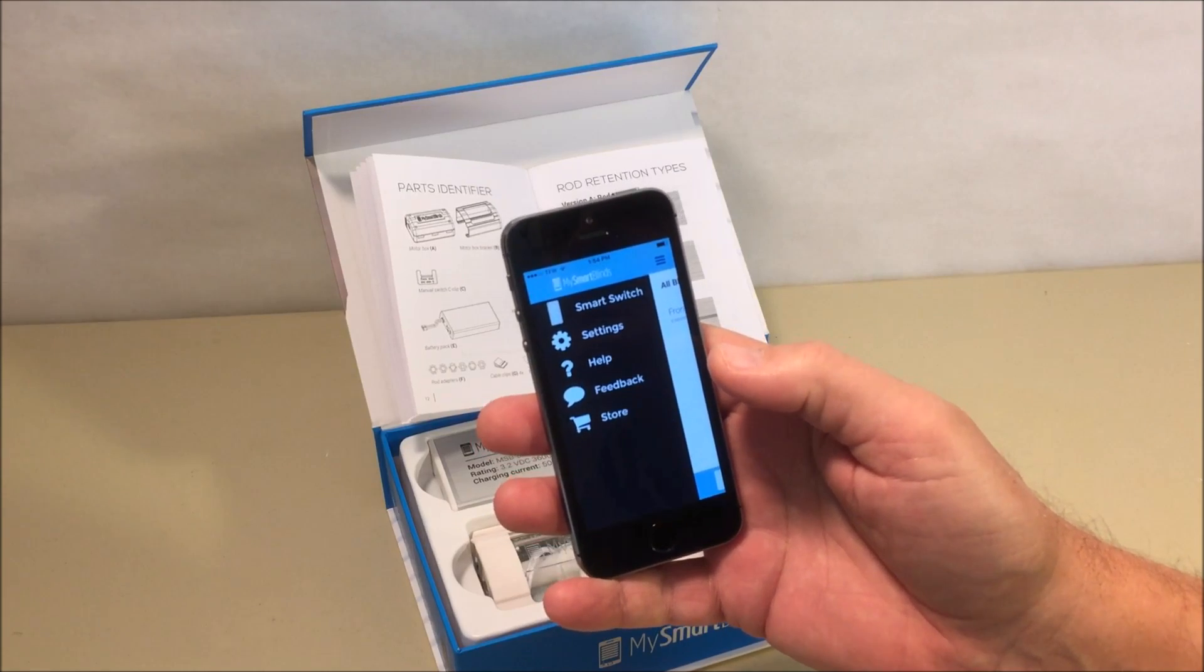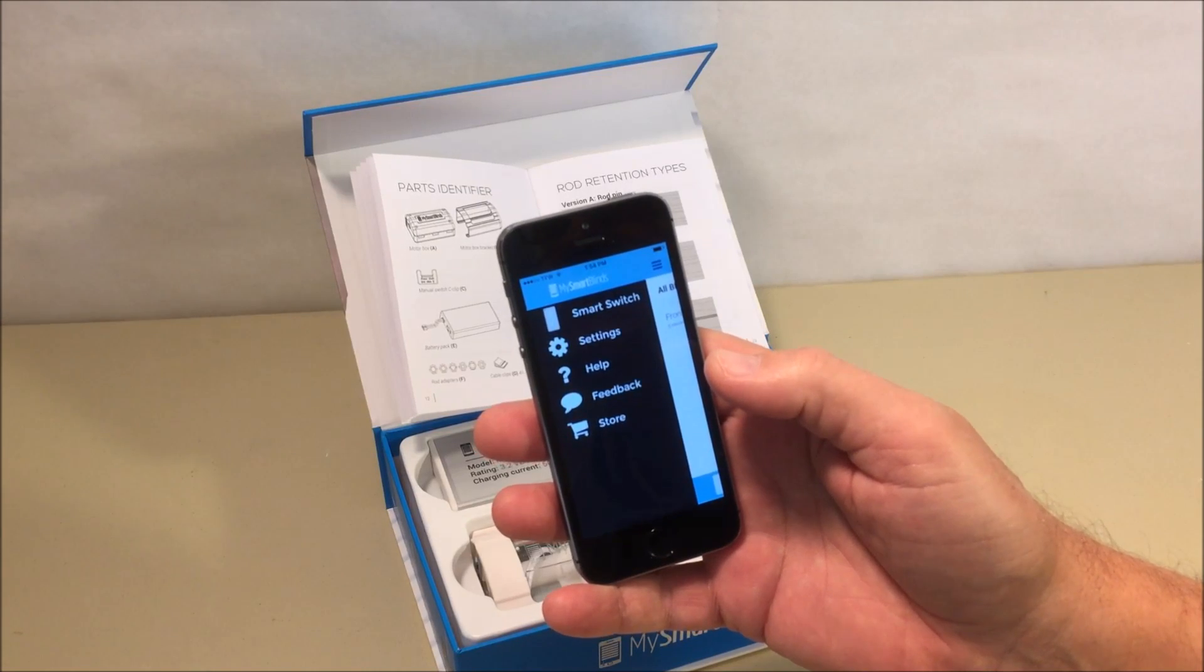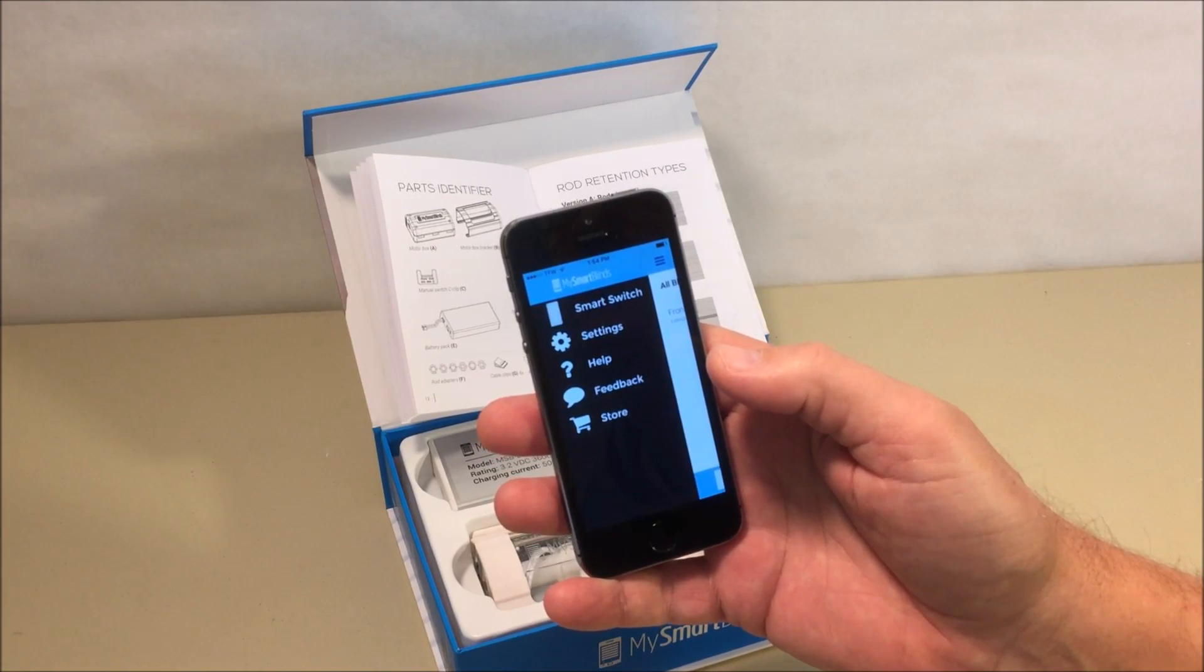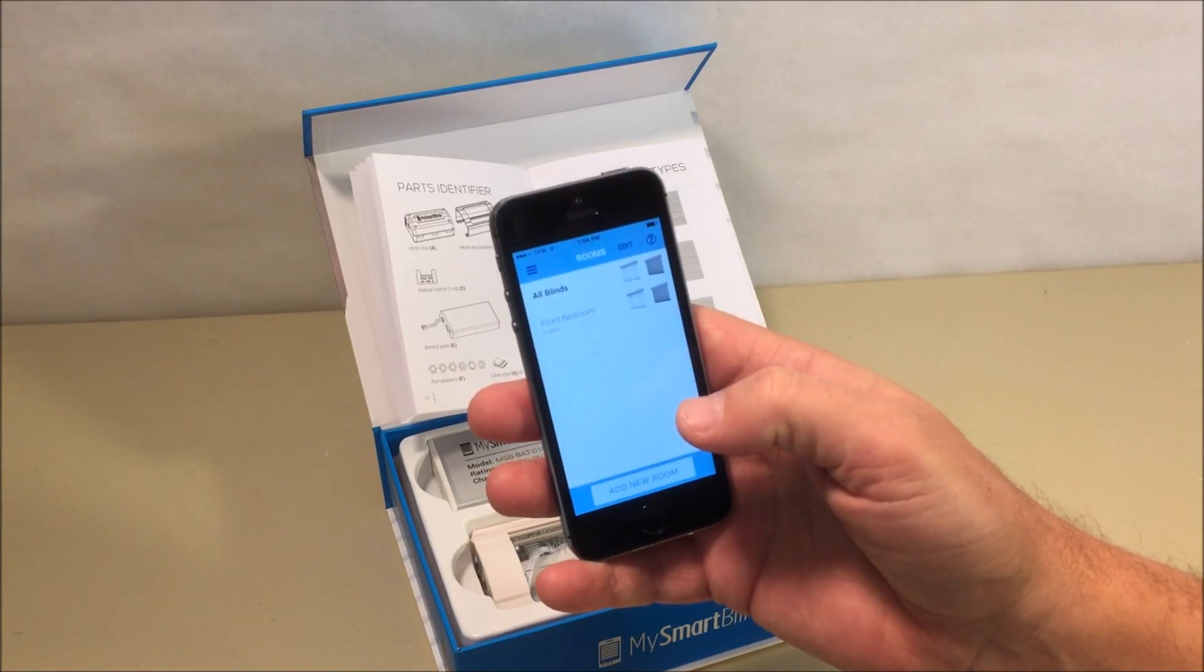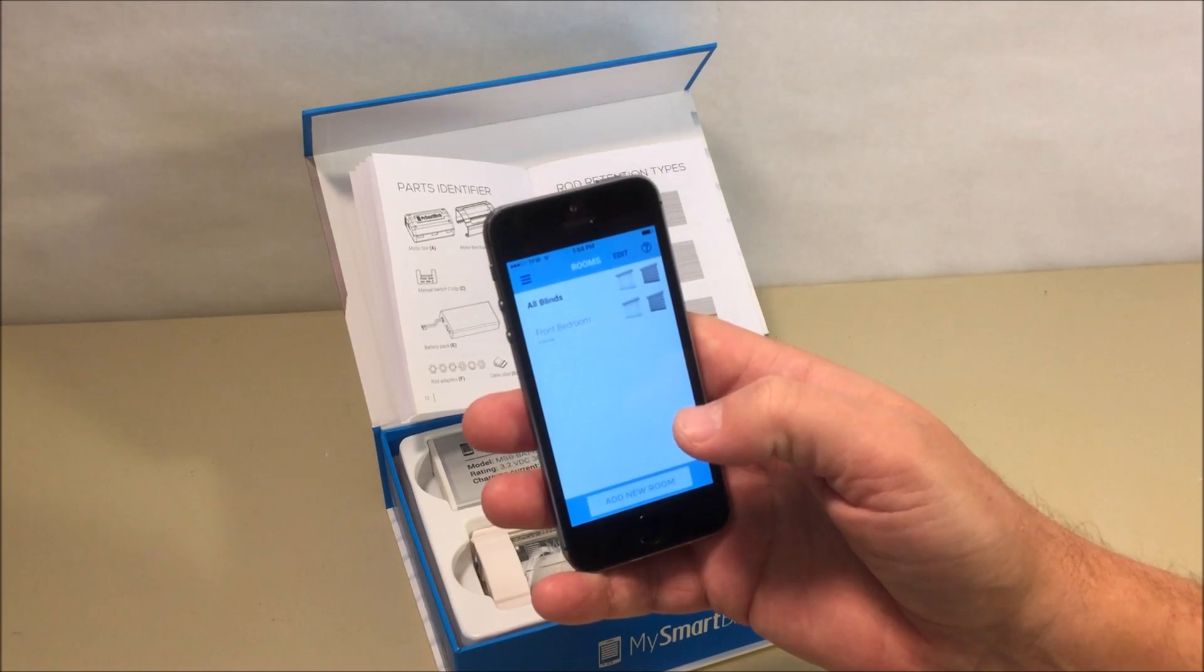The first step is to download the application called My Smart Blinds. This works on both an Apple or an Android device, and it wants you to assign your new blind automation kit to a room that you create, which in this case we just called it a front bedroom.